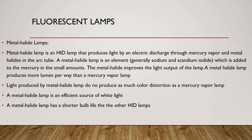Metal halide lamp: a metal halide lamp is an HID lamp that produces light by an electric discharge through mercury vapor and metal halide in the arc tube. A metal halide lamp includes an element — generally sodium scandium iodide — added to the mercury in small amounts. The metal halide improves the light output of the lamp. A metal halide lamp produces more lumens per watt than mercury vapor lamps, does not produce as much color distortion, and is an efficient source of white light. However, a metal halide lamp has a shorter bulb life than other HID lamps.